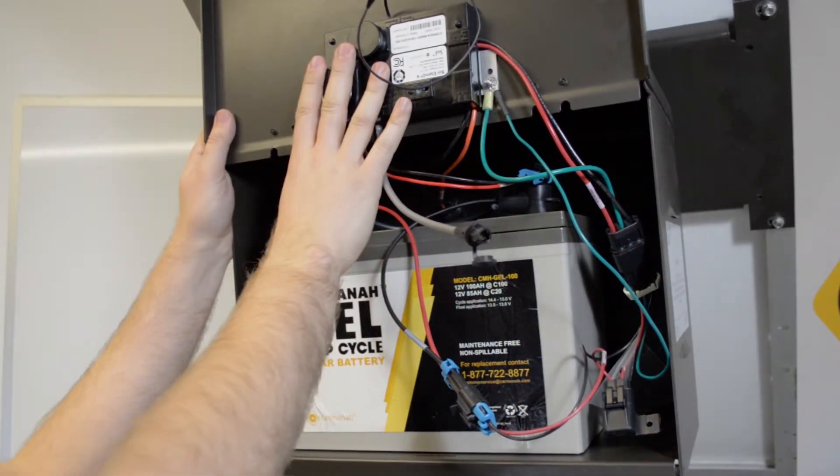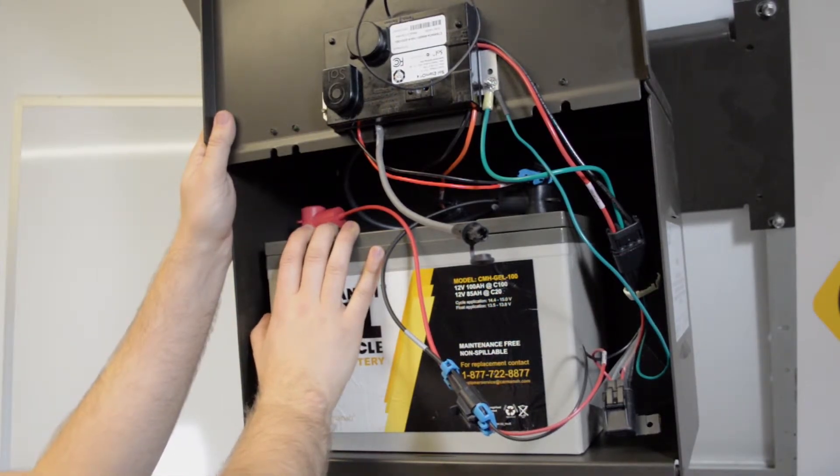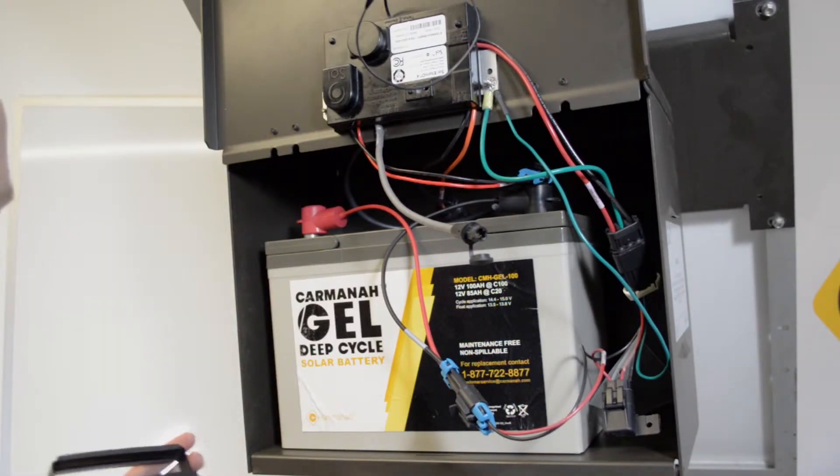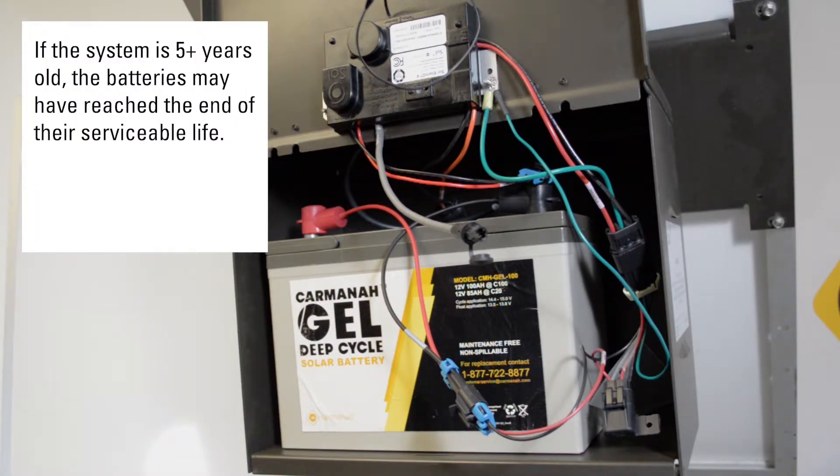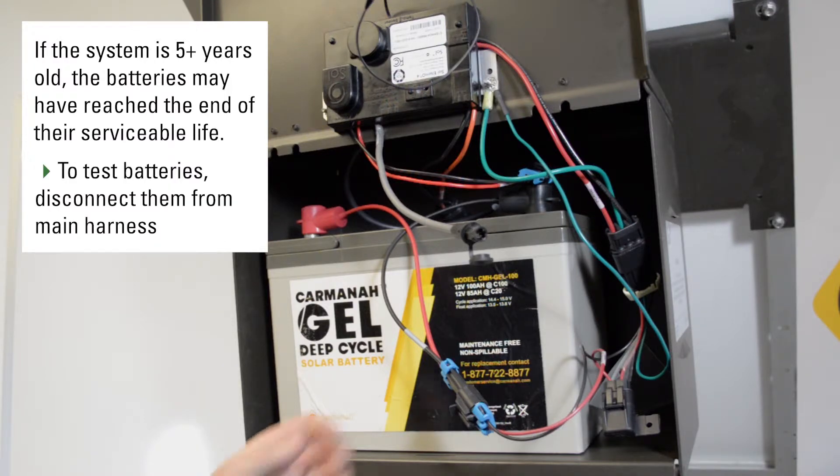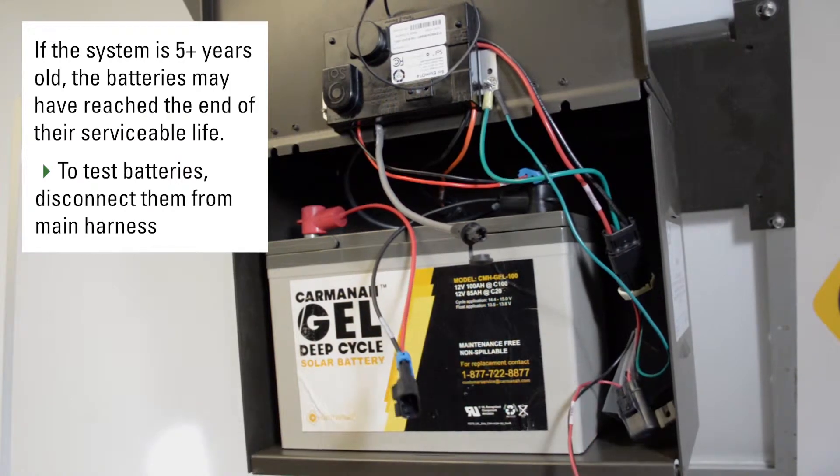If there were any issues with the EMS and there have been prolonged charging issues, the batteries themselves may be damaged and need to be replaced. The best way to test the batteries is using a load tester. If the system is over five years old, the batteries may have reached their serviceable life. To properly test the batteries, disconnect them individually from the main harness.